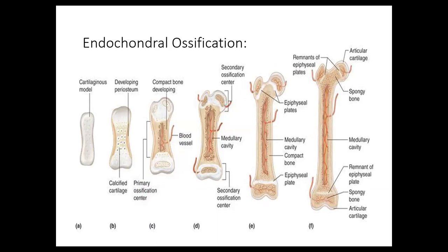Number seven: what cells are the fibrous connective tissues of intramembranous ossification derived from? All of the tissues involved in the ossification come from mesenchymal cells, which may also be referred to as embryonic stem cells. Ossification forms the bones of the skull and the clavicle; most flat bones in the body are formed through this process.